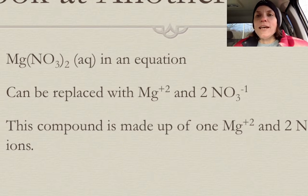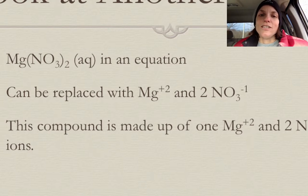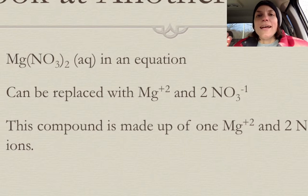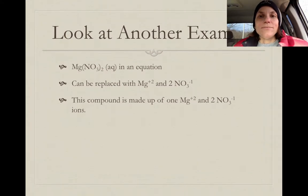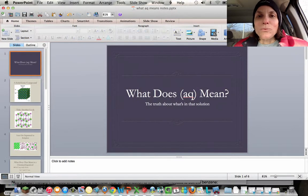So if you were to see Mg(NO3)2 with the AQ designation, that means that substance is completely dissolved in water. And it could be accurately represented with a magnesium +2 and two nitrates with a -1. And there you have it. That's what's really happening in your aqueous solutions.